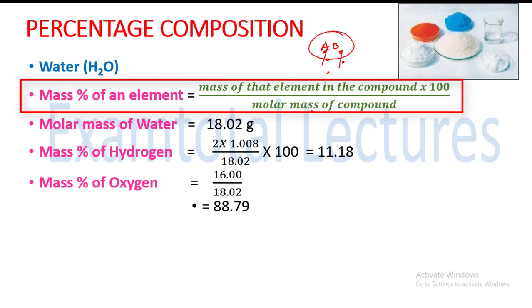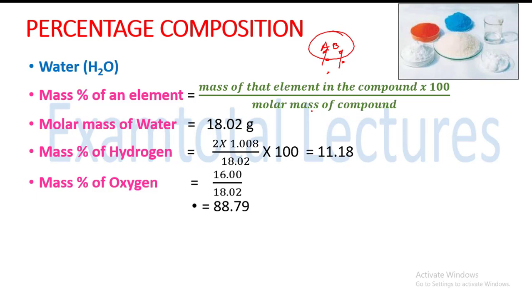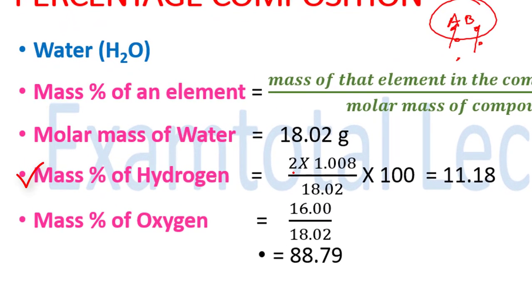Molar mass — how did we get it? In the previous video, part 13. So first, molar mass: we will use water, which is 18.02 grams. What is the mass percentage of hydrogen? That is equal to 2 atoms of hydrogen multiplied by its molar mass of 1.008, divided by 18.02, into 100. This is the mass percentage of hydrogen.